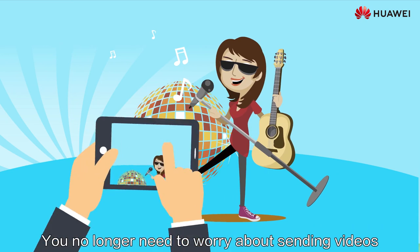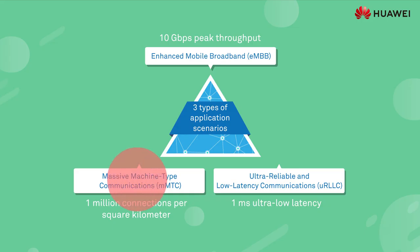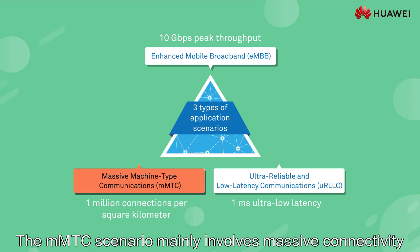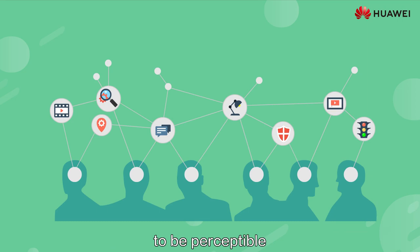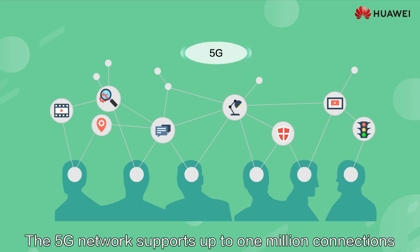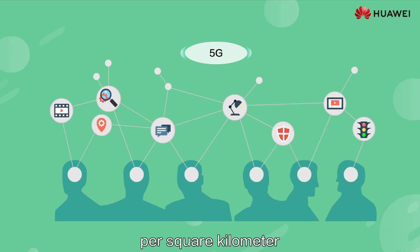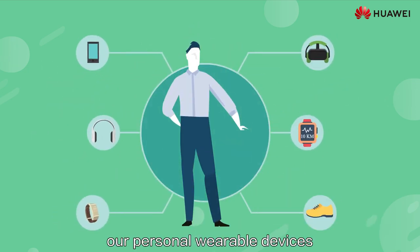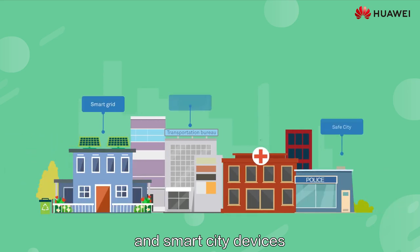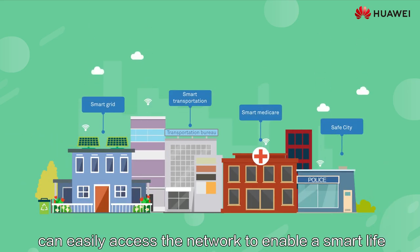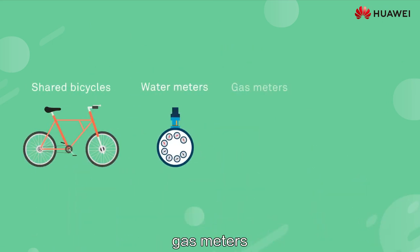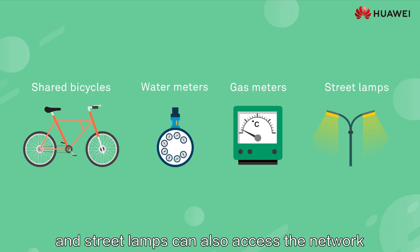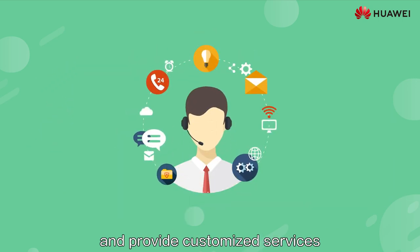You no longer need to worry about sending videos at a concert. The mMTC scenario mainly involves massive connectivity, enabling all the things in the entire society to be perceptible. The 5G network supports up to 1 million connections per square kilometer. In this way, personal wearable devices, smart home devices, and smart city devices can easily access the network to enable a smart life. Shared bicycles, water meters, gas meters, and street lamps can also access the network and provide customized services for users based on connections.